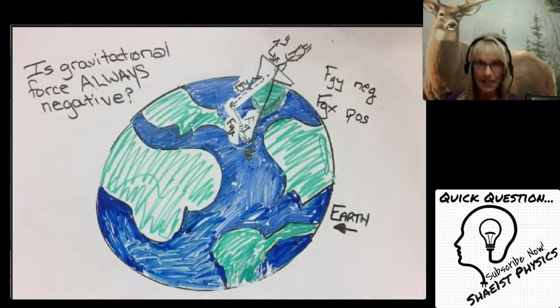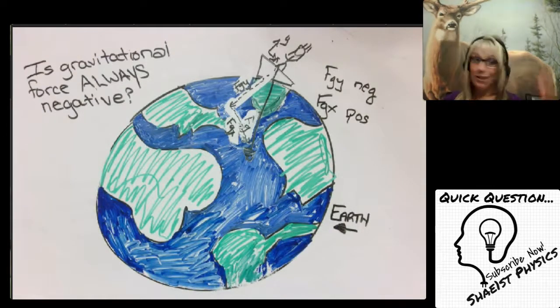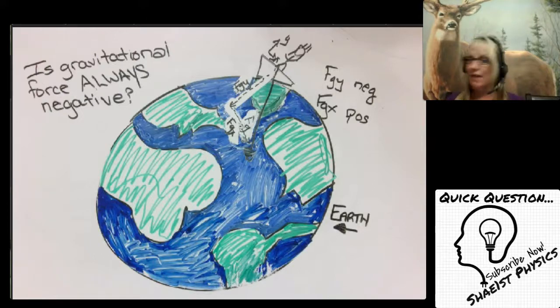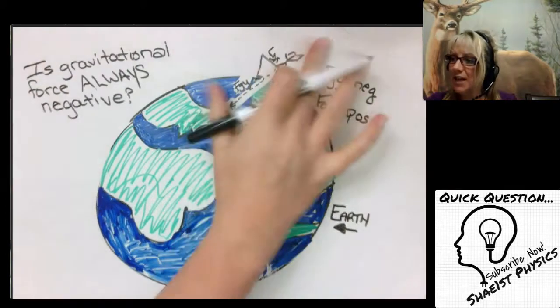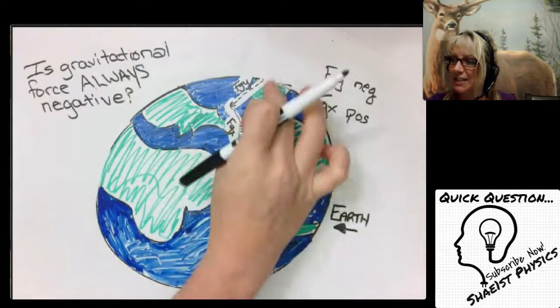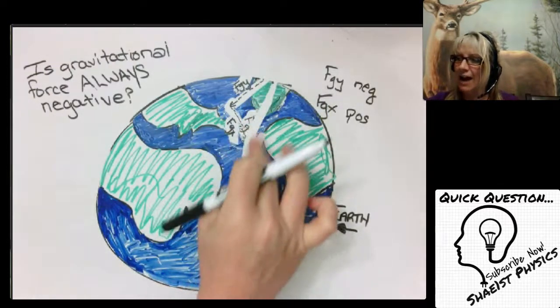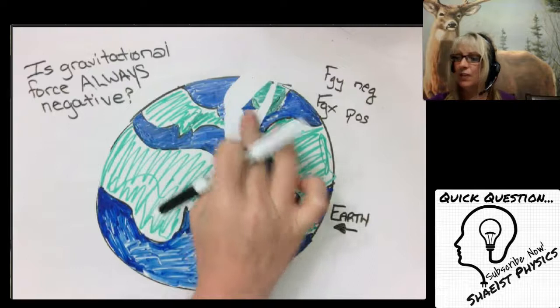Again, force of gravity always goes down towards the center of the earth. However it's really going to depend on where you place that axis as to how you're going to define whether that force of gravity is positive or negative.